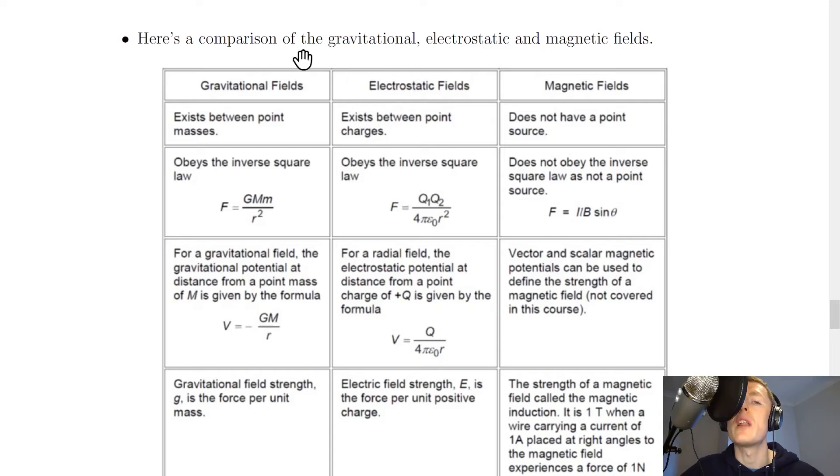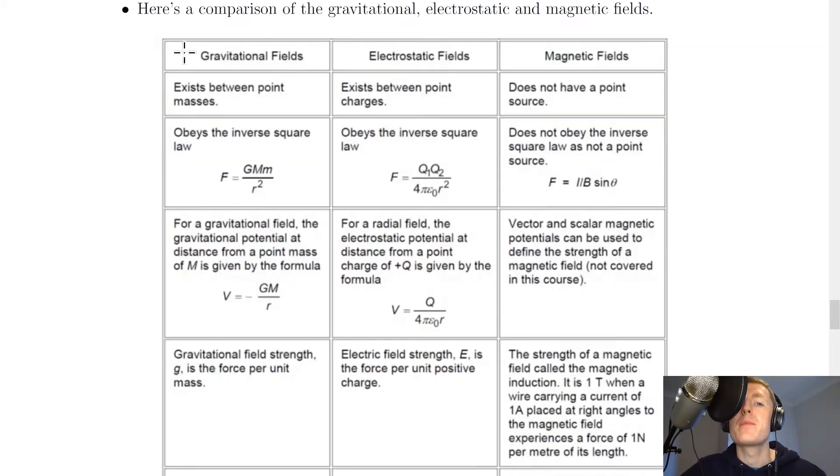Next we've got a table allowing us to compare the gravitational, electrostatic and magnetic fields. So gravitational fields exist between point masses, electrostatic fields exist between point charges and magnetic fields do not have a point source. They exist as magnetic poles.